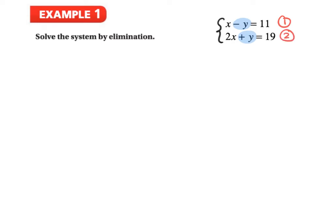We want to identify which variable has a coefficient that is either the same number or the opposite. Here, the y's have positive 1 and negative 1 as their coefficients. So we decide: should we add or subtract these two equations so that y becomes 0? Negative 1y plus positive 1y gives us 0, so we're going to add our two equations — equation 1 plus equation 2.